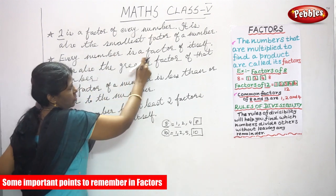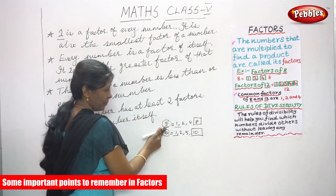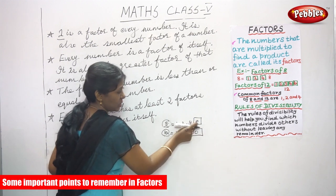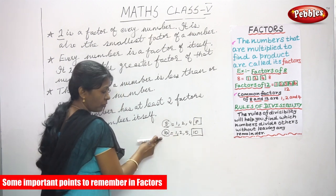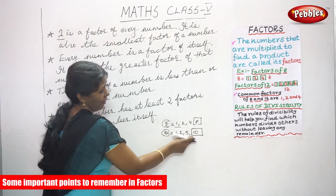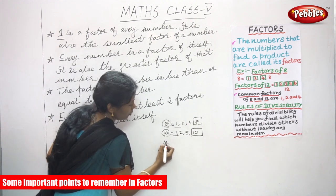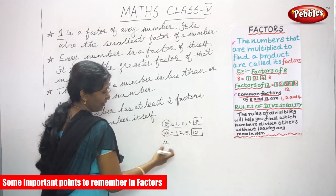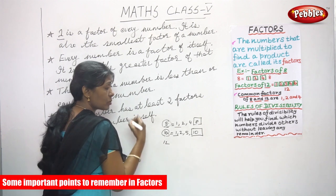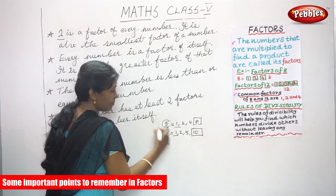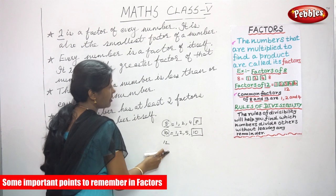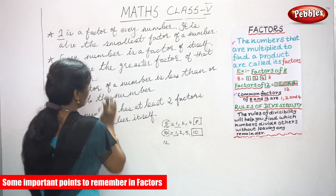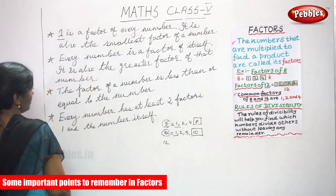Every number is a factor of itself — 'itself' means the same number. If you want to find the factor of eight, eight is a factor. If you want to find the factor of ten, ten is a factor. If you want to find the factor of twelve, twelve is a factor. The same number will always come as a factor, and that is the greatest factor among all the factors.